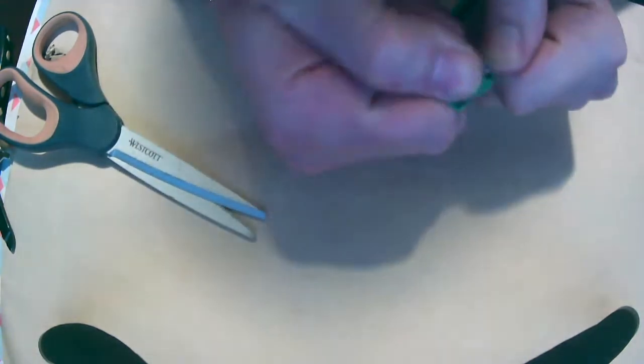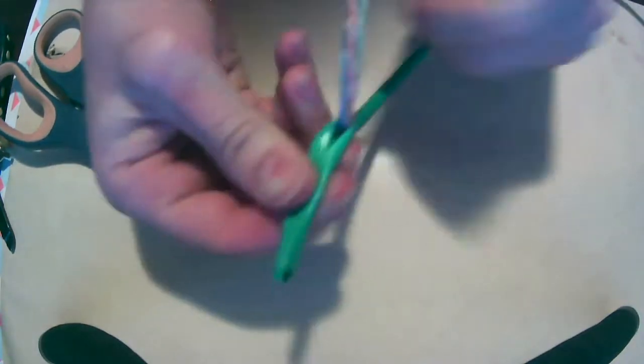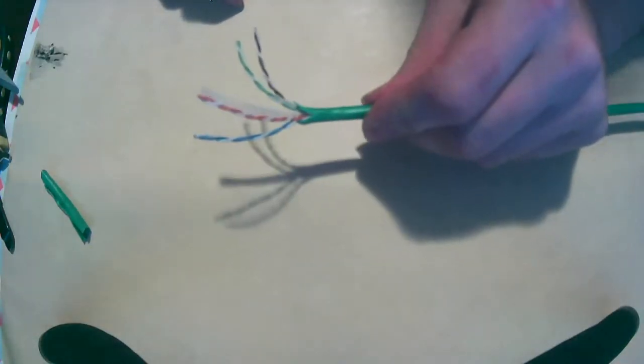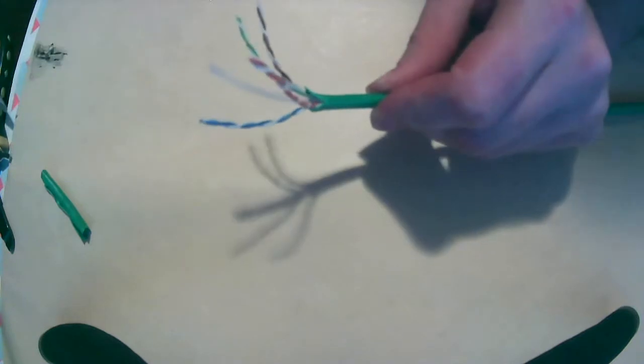You want to give yourself maybe an inch or two of wire to work with because we're going to be soldering these wires to a JST connector. This is optional, you could solder straight to the LEDs, but the strips already come with a JST connector on them and it makes the whole project more modular.